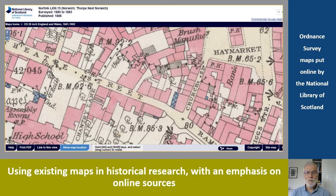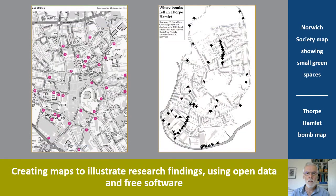Hello and welcome to this talk for the Norwich Society of Historians. It covers two topics. The first is using existing maps in historical research with an emphasis on online sources. The second is creating maps yourself to illustrate your research findings, in particular using open data and free software. I'll give examples I've produced in this way for the Norwich Society and the Thorpe Hamlet History Group.